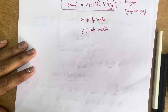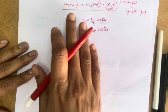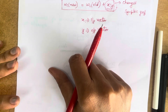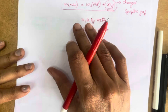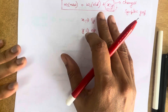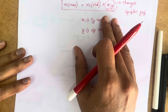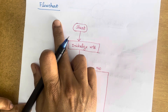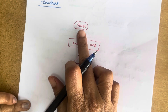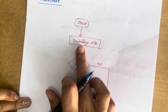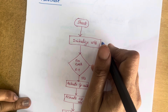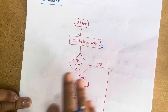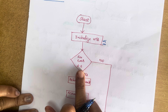In this video I am going to teach you three things: the introduction about the Hebb network, the flowchart of the Hebb network, and the training algorithm for the Hebb network. Using this basic introduction and algorithm you will be able to solve problems using the Hebb network. The flowchart starts with initializing the weights, which can be set to zero. Then for each training input-output pair (s, t), you perform the following steps.